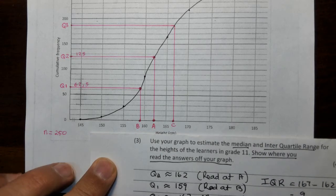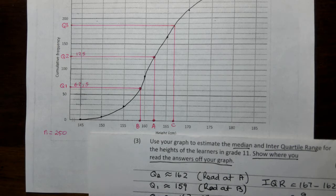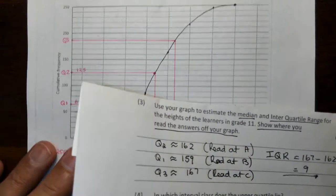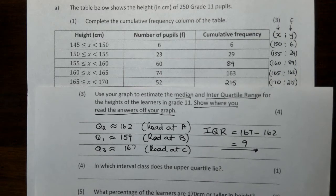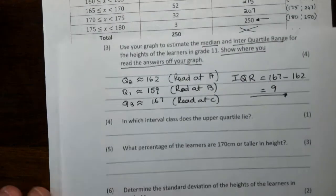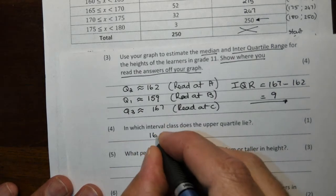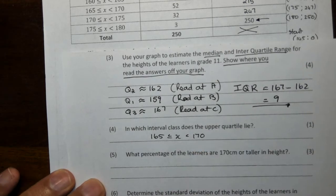They ask you in which interval does the upper quartile fall. That's quartile 3, folks. Quartile 3 we saw is at 167. If I go to my class intervals, 167 lies on the interval 165 to 170.